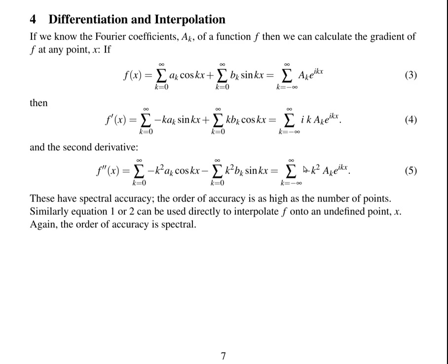If you do differentiation like this it has spectral accuracy, so the order of accuracy is as high as the number of points. Similarly, Fourier series can be used to interpolate f from the sample points onto an undefined point x by evaluating the function using the sum of the sines and cosines, and again the order of accuracy is spectral.